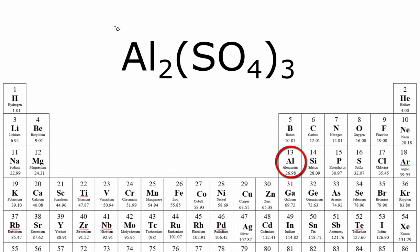For aluminum, that's 26.98, sulfur is 32.06, and then oxygen is 16.00.